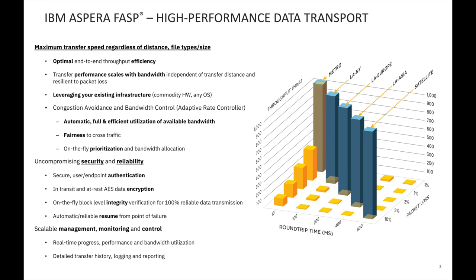As you can see on the right-hand side of this slide, whenever you're trying to transfer data between locations that are far apart, you're going to face more latency and packet loss. These parameters drastically affect transfer performance when leveraging common TCP-based transport protocols such as FTP or HTTPS, which are commonly used in ICN as an upload and download mechanism.